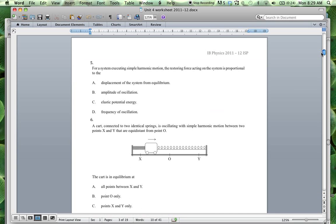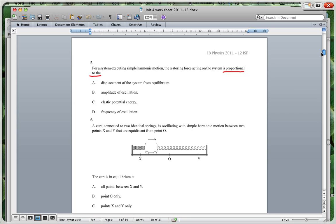It says, for a system executing simple harmonic motion, the restoring force acting on the system is proportional to the... Alright, so it's proportional to it. This is just straight from your definition. And it's obviously going to be A, the displacement of a system from the equilibrium. Remember, our basic formula defining simple harmonic motion is this, where omega is the angular frequency and x is the displacement from the equilibrium. So I hope you all would have got that, no problem.